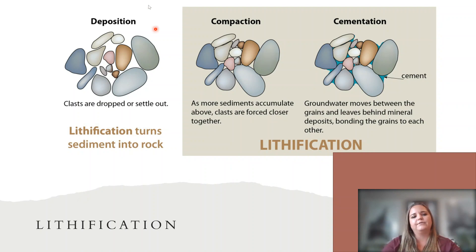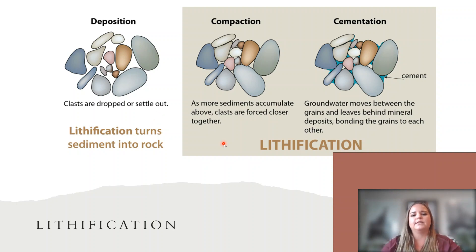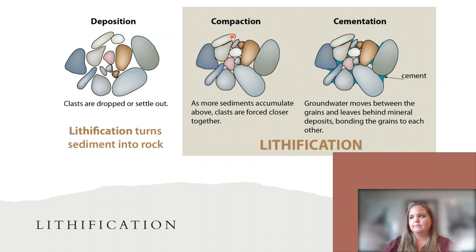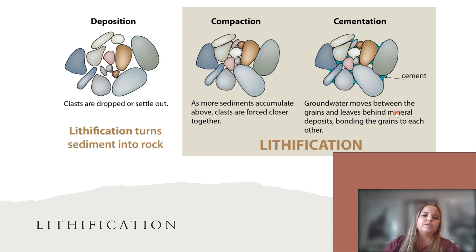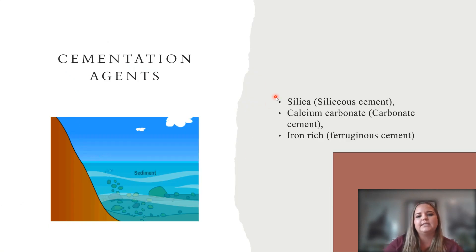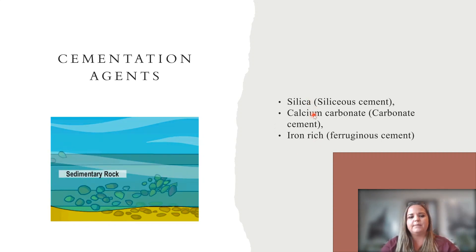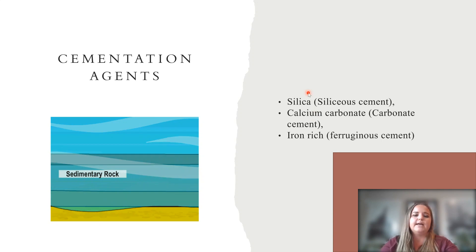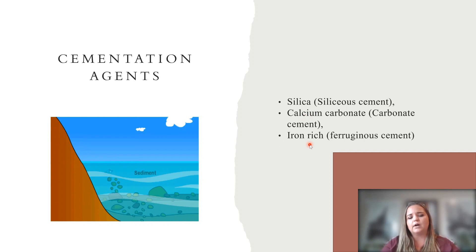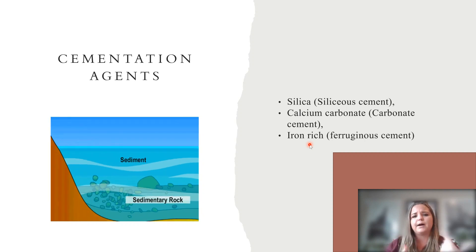Lithification is the last step. After deposition, clasts drop out and settle, and compaction starts — more sediment accumulates above, forcing the grains to compact and press together. This is a naturally occurring process. Then groundwater moves through or, if deposited below the ocean floor, a cementing agent fills in the gaps. Cementing agents include siliceous cement, carbonate cement, or iron-rich cement. Most silica and calcium carbonate are found in marine environments and come from shells, while iron-rich cement comes from groundwater interaction with deposited sediment minerals.